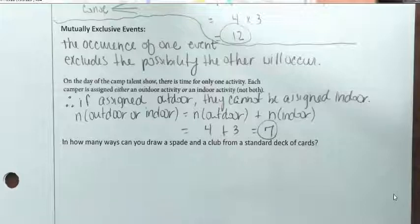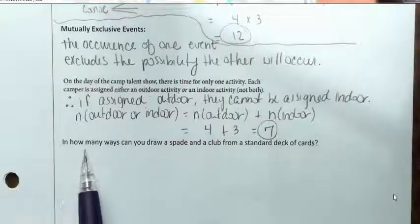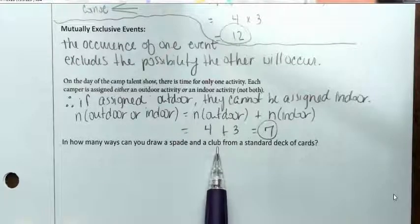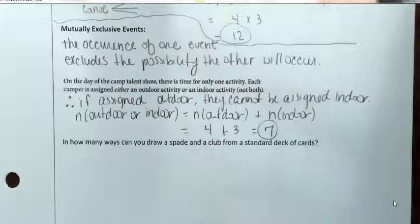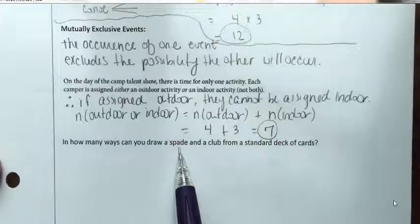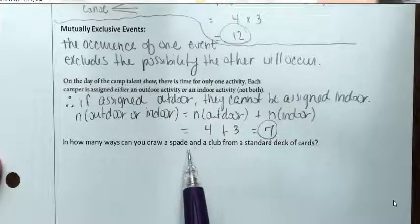Let's apply this to cards. There are four different suits in a deck of cards. In how many ways can you draw a spade and a club from a standard deck? Every suit has 13 cards. If I draw a spade, I have 13 possibilities — is that going to affect whether I draw a club? It's not — I'm still going to have 13 clubs in the deck.